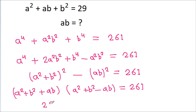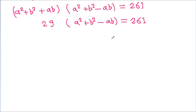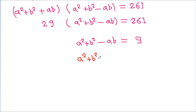So this becomes 29 × (a² + b² − ab) = 261, which gives a² + b² − ab = 9. We take this as equation 1 and a² + ab + b² = 29 as equation 2.